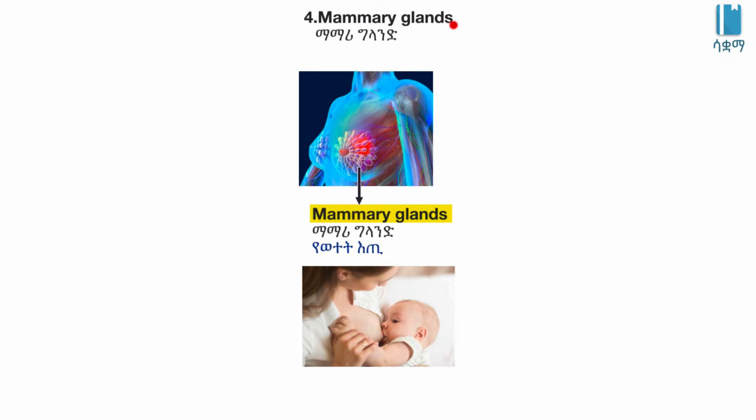Mammary glands. In mammals, mammary glands produce milk to feed their young.